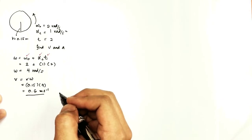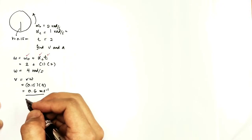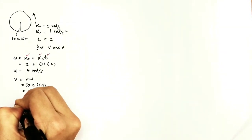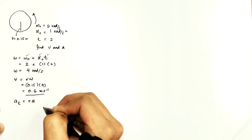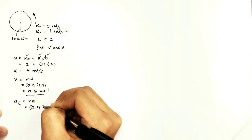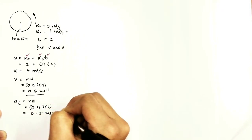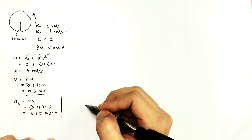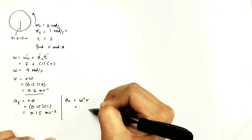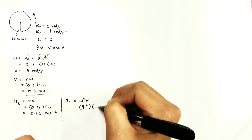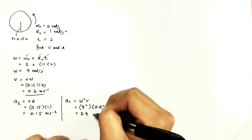Next, we need to find the acceleration. We have two types of acceleration: the tangential and also the normal acceleration. The tangential acceleration aT equals r times angular acceleration, so we have 0.15 times 1, giving 0.15 meter per second squared. For the normal acceleration, aN equals omega squared times r, so we have 4 squared times 0.15, giving 2.4 meter per second squared.